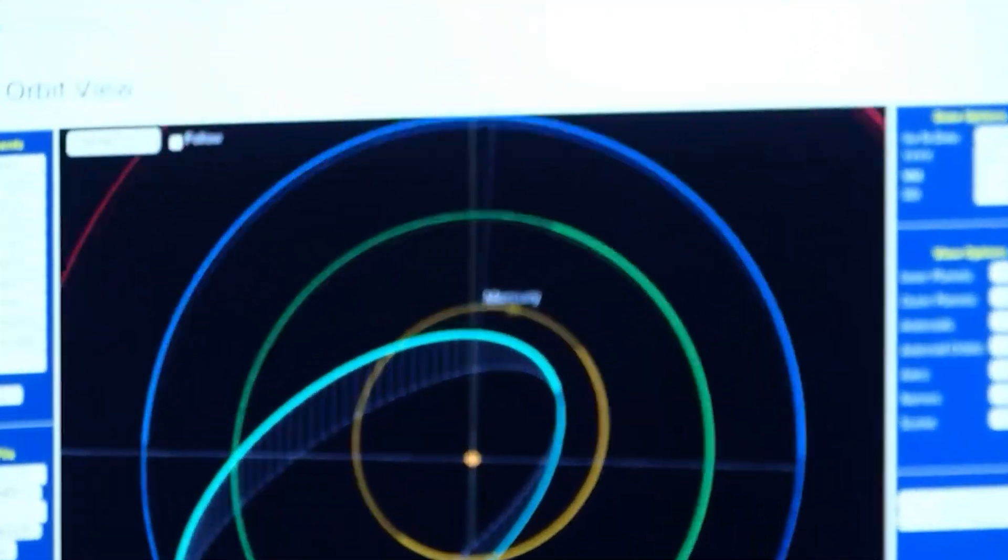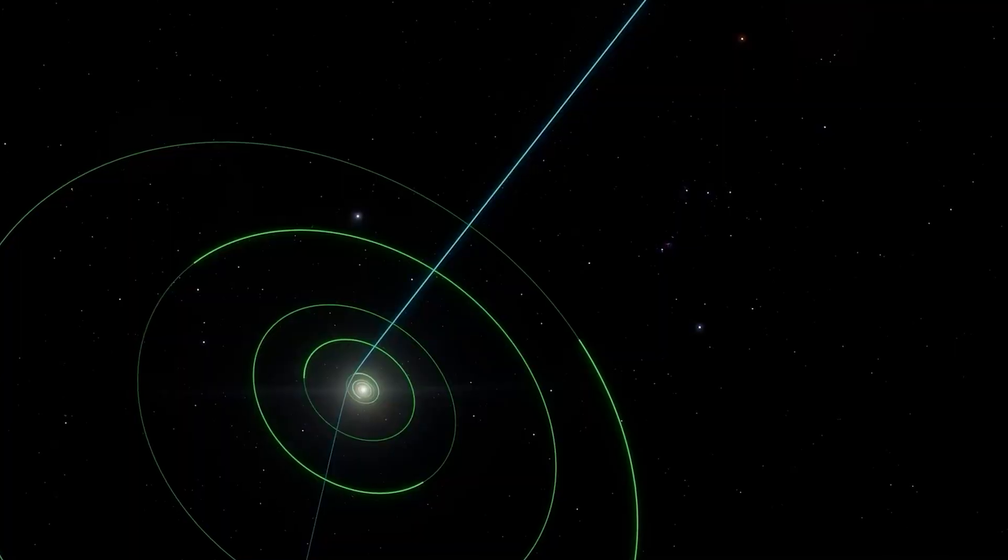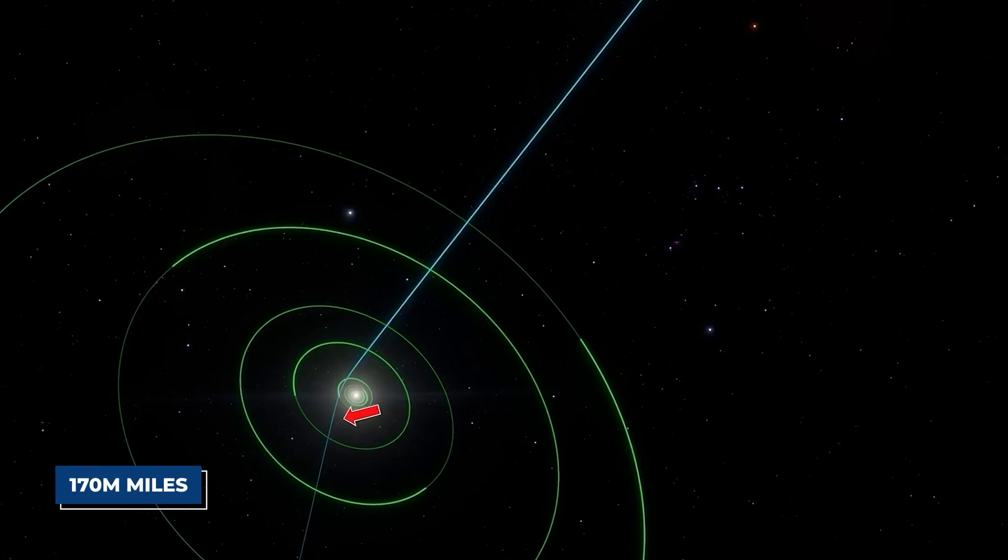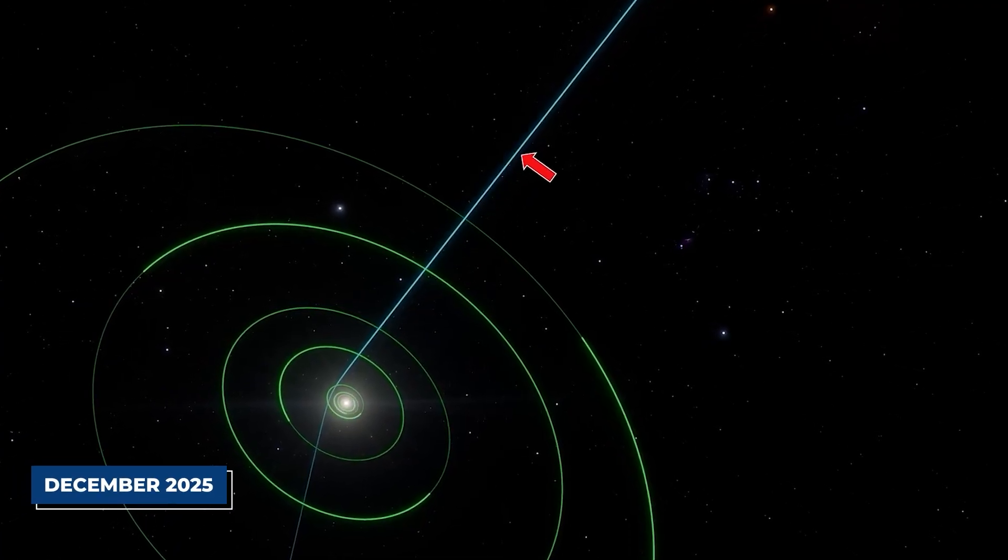Crucially, experts had repeatedly stated that 3I Atlas posed no threat to Earth, with its closest predicted pass at about 170 million miles from our planet in December 2025. So, if there was no direct impact threat, why the sudden shift in a critical launch schedule?